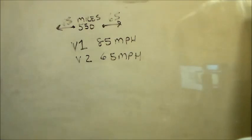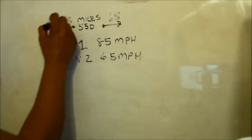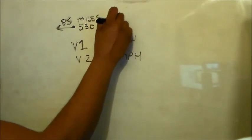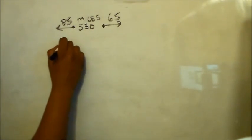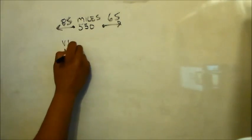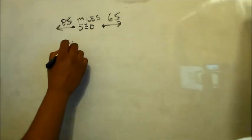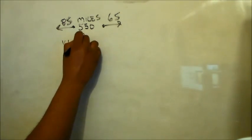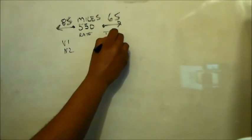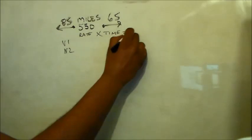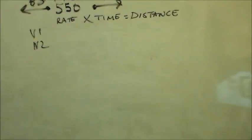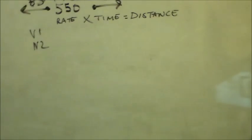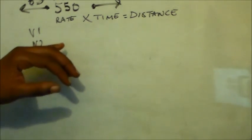We still work with the formula: distance equals rate times time. In the interest of saving space, we're going to set up our formula for vehicle one and vehicle two. Vehicle one and vehicle two each have a rate and a time, and that equates to a distance because distance equals rate times time. I'll zoom in so you can see that.